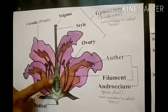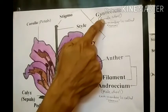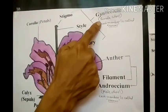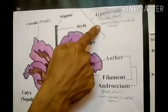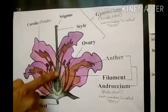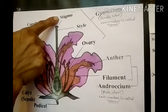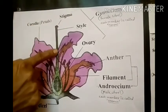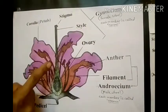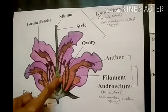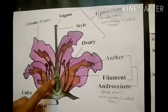The innermost part is called the gynoecium — that is the female whorl. Each member of the gynoecium is called a carpel. Here is the gynoecium. The upper part is called the stigma. Then the tube-like part is called the style. And the lower part is called the ovary. The ovary contains ovules.